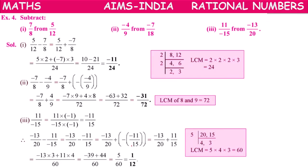In this way we can subtract any two rational numbers. The condition is they should be in standard form first, then written as addition using additive inverse, then converted to common denominator, and simplified.